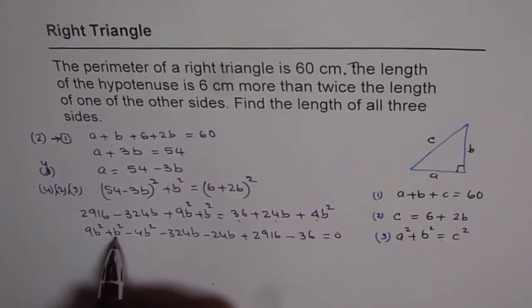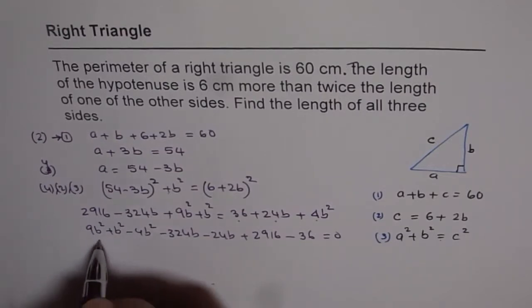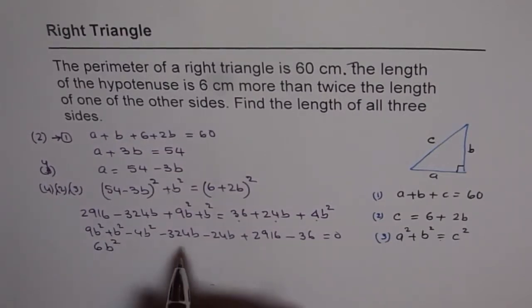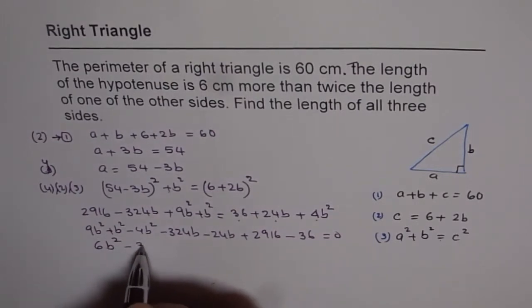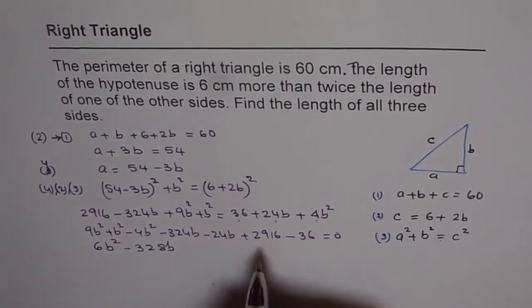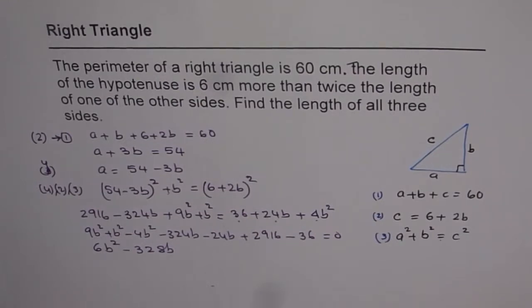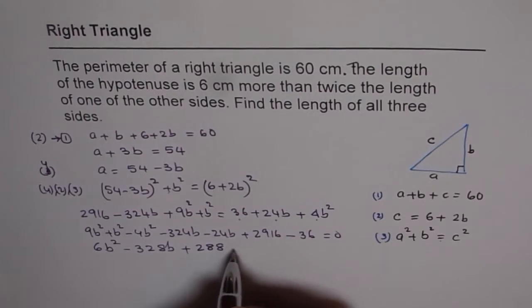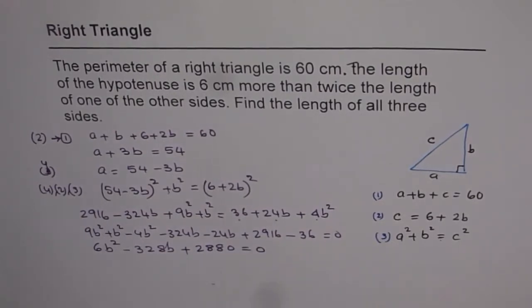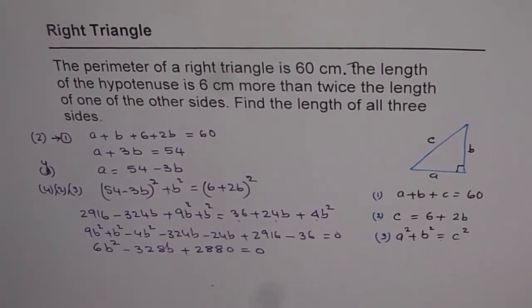Now we can combine the terms. 9 plus 1 minus 4 is 6b square, and here we have minus 348b, and then 2916 minus 36 gives us plus 2880 equals 0.